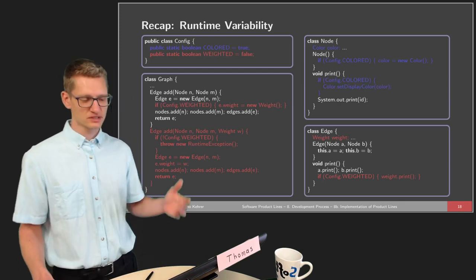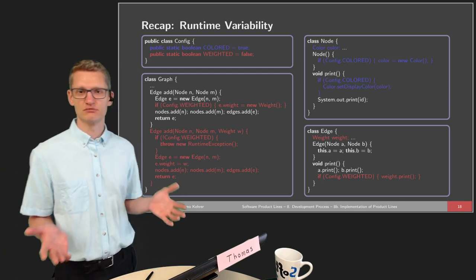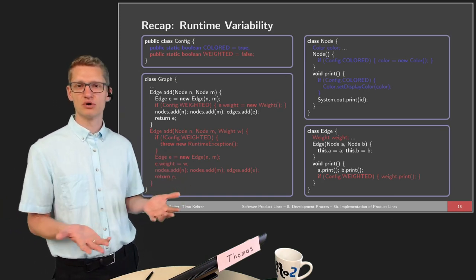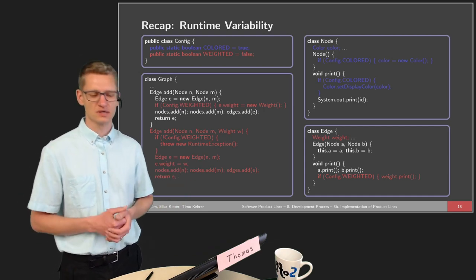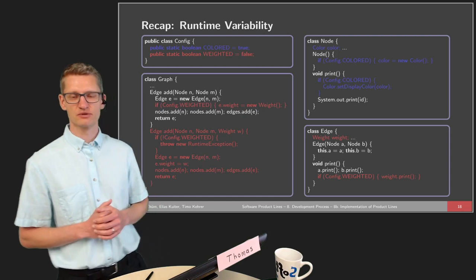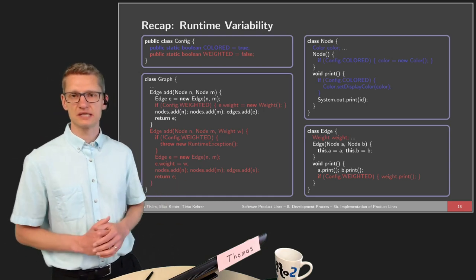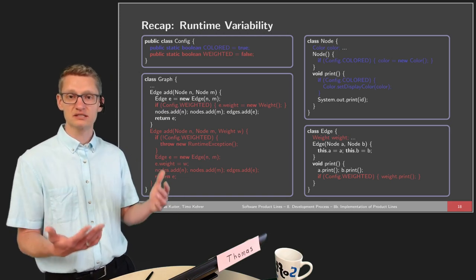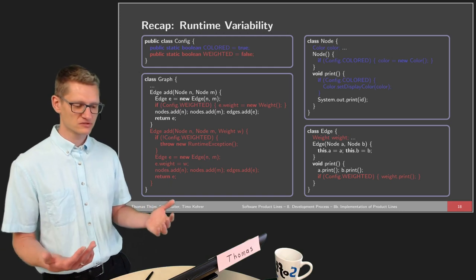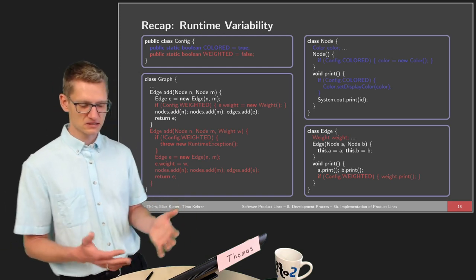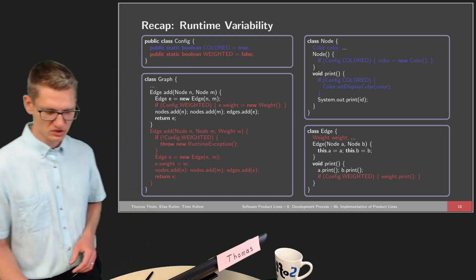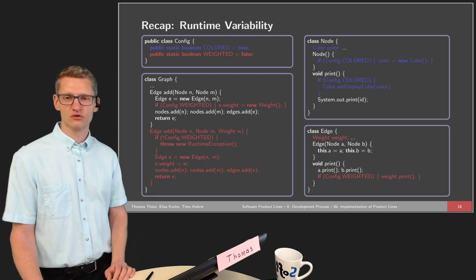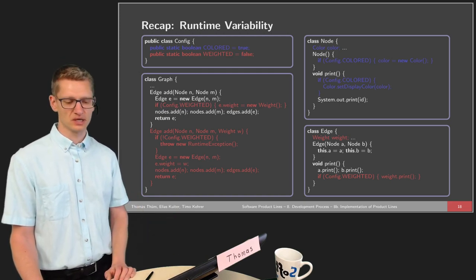So let's come to the recap. We talked about runtime variability. In runtime variability we have variables and states in our program — in memory and in the local organization of the program. Those states and variables identify how the system should behave. At runtime it is decided whether graphs have colors or are weighted, and this is then taken into account in terms of the behavior of the system.